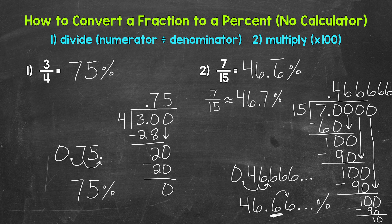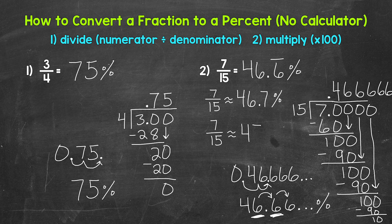You can also round to the nearest hundredth or whatever place you would like. And then the last option I'm going to mention is rounding to the nearest whole percent — that's going to be the ones place. If we look here, we have a six in the ones place with a six to the right in the tenths. So is this closer to 46 percent or 47 percent? Well, that six in the tenths place tells us to round up — this is closer to 47 percent. So seven fifteenths is approximately 47 percent.